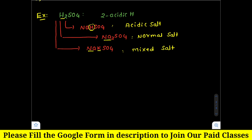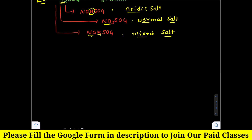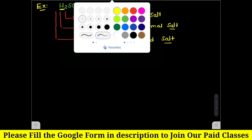I hope you understood. If at least one acidic hydrogen is present, it is an acidic salt. If no acidic hydrogen is present and all are replaced with the same metal, it is a normal salt. If no acidic hydrogen is present and all are replaced with different metals, that is called a mixed salt.